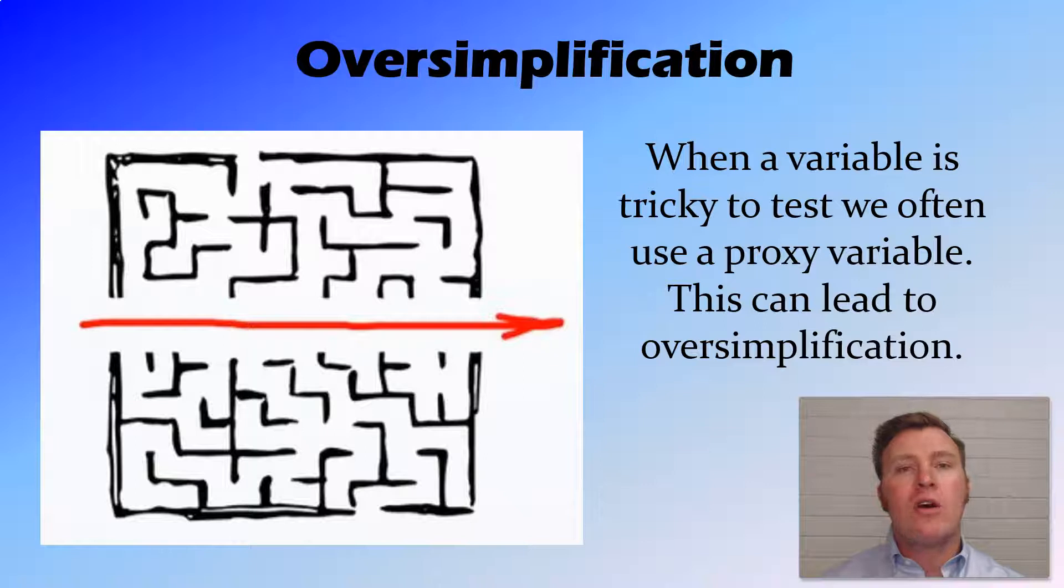Now, when we're working out whether we're testing the variables that we want to test, it's easy to oversimplify an experiment, particularly where the thing that we want to test is a tricky concept. So we can't test it directly, and therefore we have to test it through using another variable. This variable is called the proxy. It's a variable that we test instead of the thing that we're actually setting out to test, because we're running on the assumption that that thing we're setting out to test directly relates to the proxy.